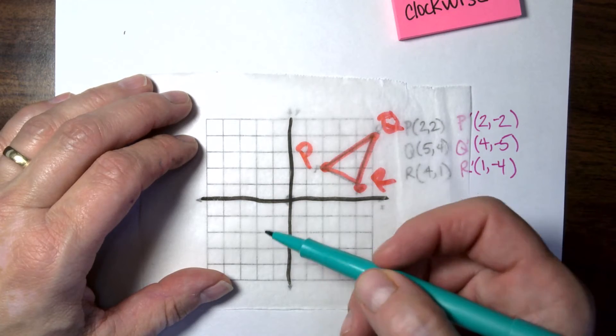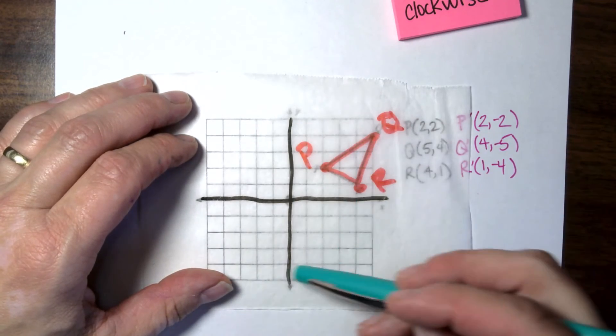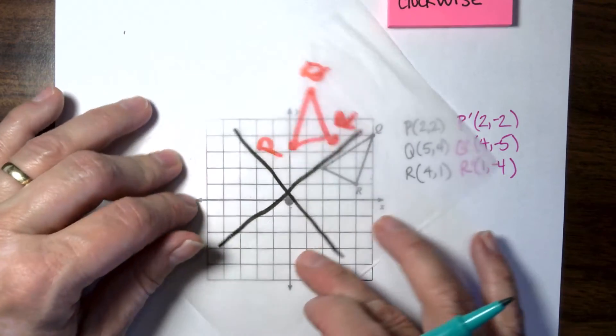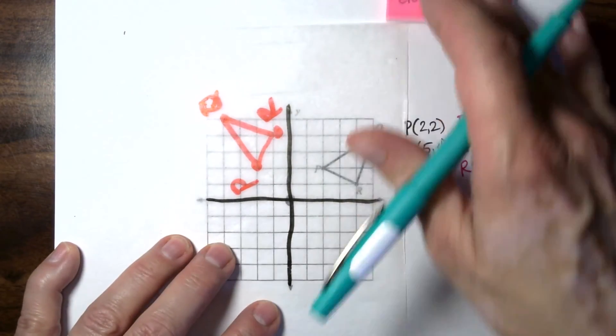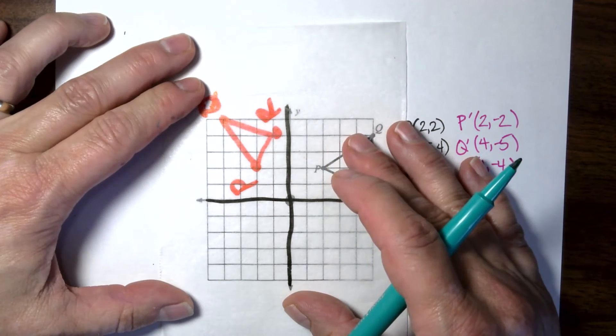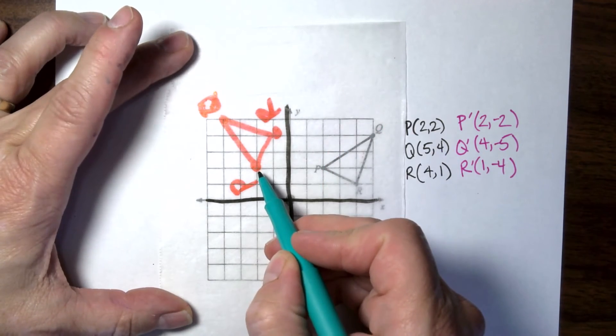We're going to do P double prime. Let's see where it's going to land first. So counterclockwise means you're going against the clock. So look up and see which way the second hand is going, which is probably this way. And you want to go the other direction. So you're going to go one click this way.